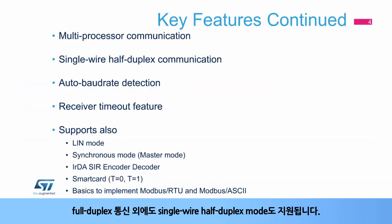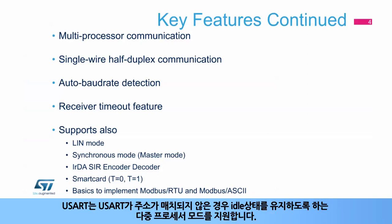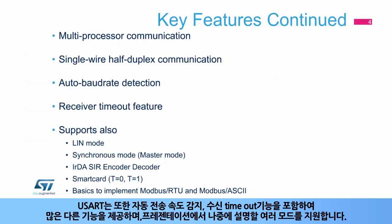The USART features a multiprocessor mode, which allows the USART to remain idle when it is not addressed. In addition to full duplex communication, single-wire half-duplex mode is also supported. The USART also offers many other features including auto-baud rate detection, receiver timeout, and supports several modes which will be described later in the presentation.